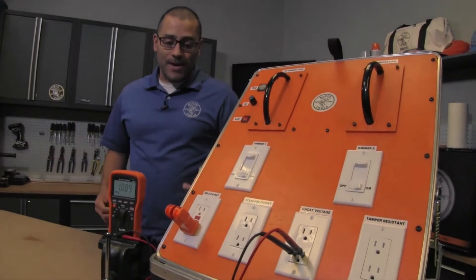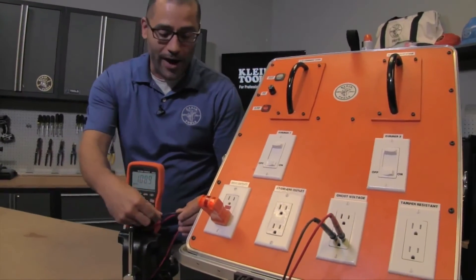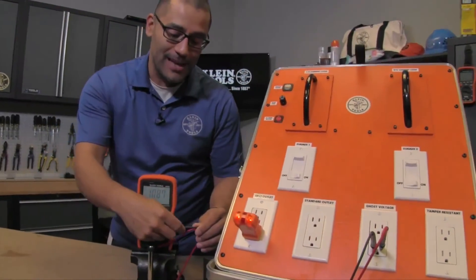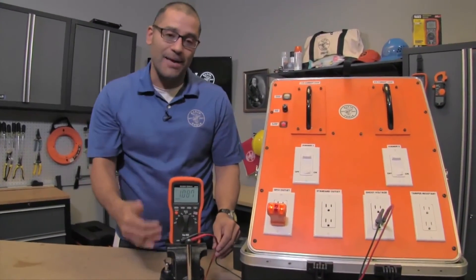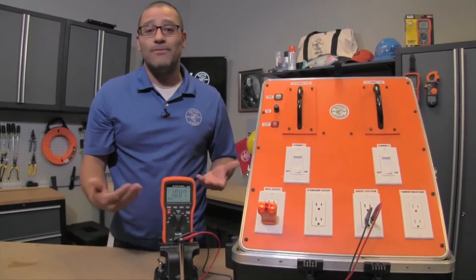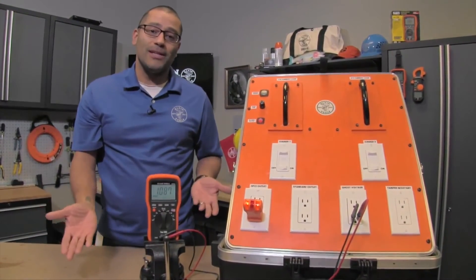Ghost voltage basically can be two wires running side by side where one wire has voltage on it and that voltage is actually induced into the second wire. So when you take your meter and hook it up and it's in high impedance it'll just read that voltage thinking voltage is there. However when you plug a load in you actually won't get the load to turn on.